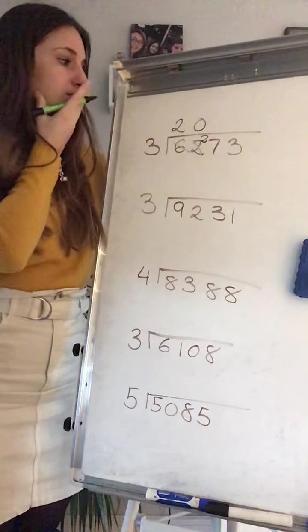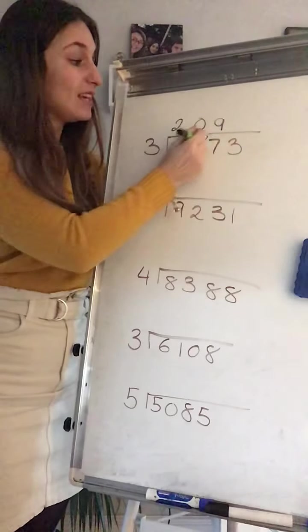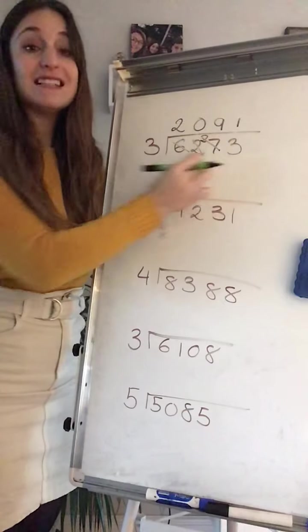27 on my 3 timetable. 9. 9 times 3 is 27. 3, 1. 1 times 3 is 3.